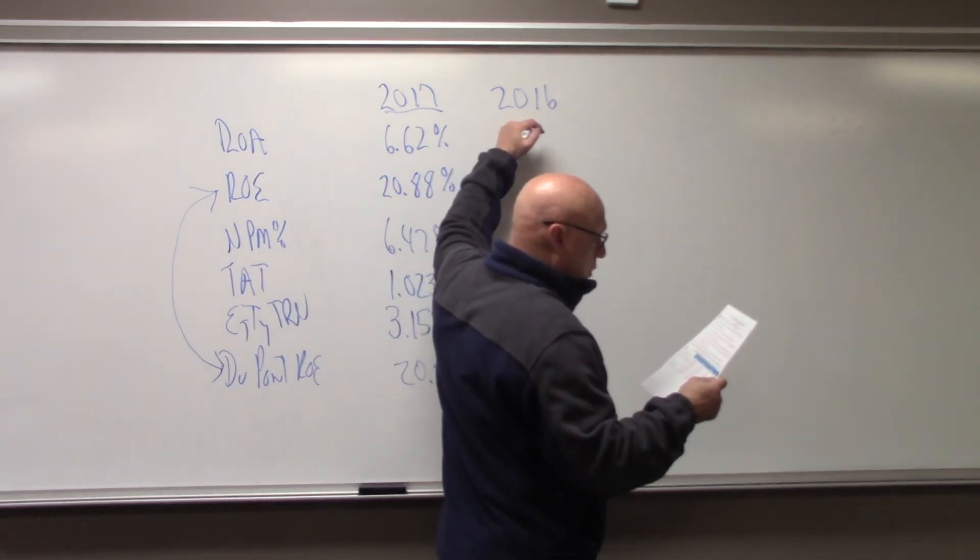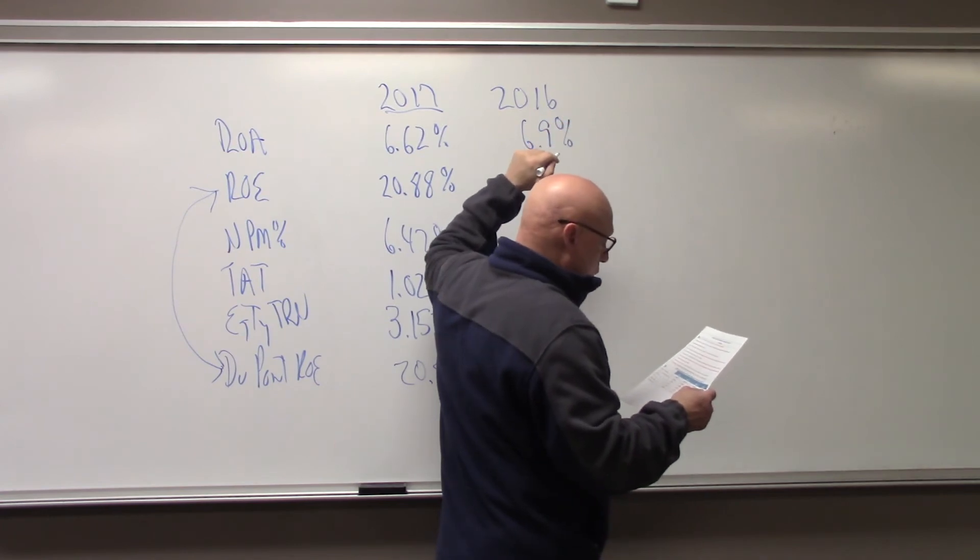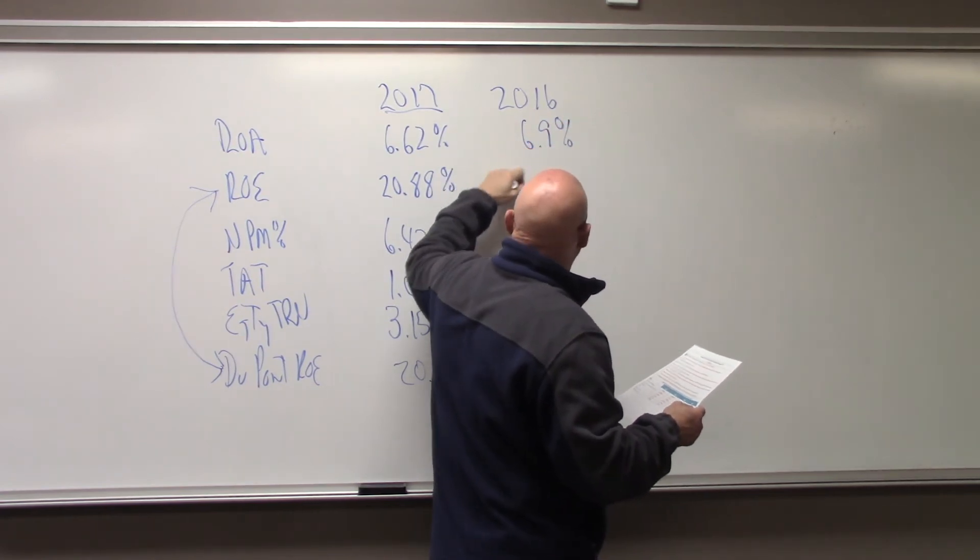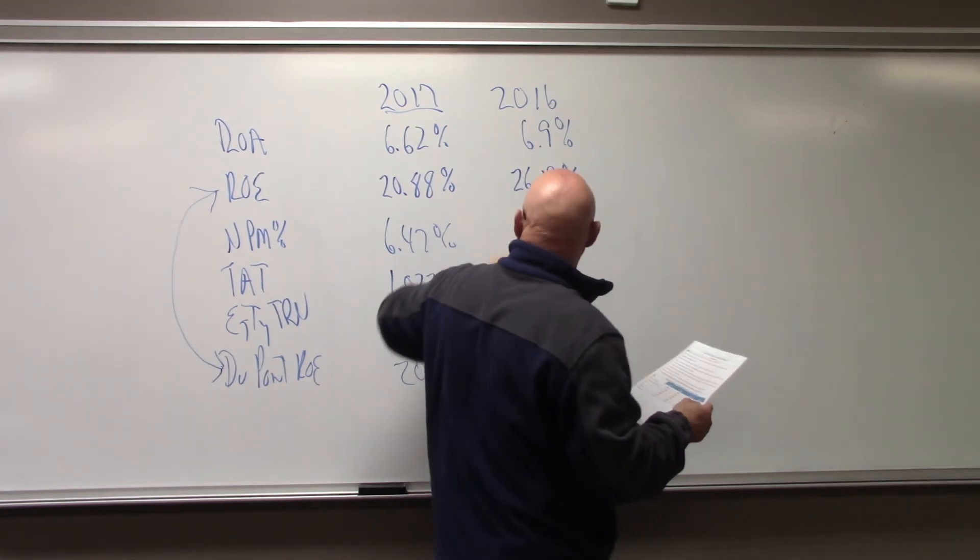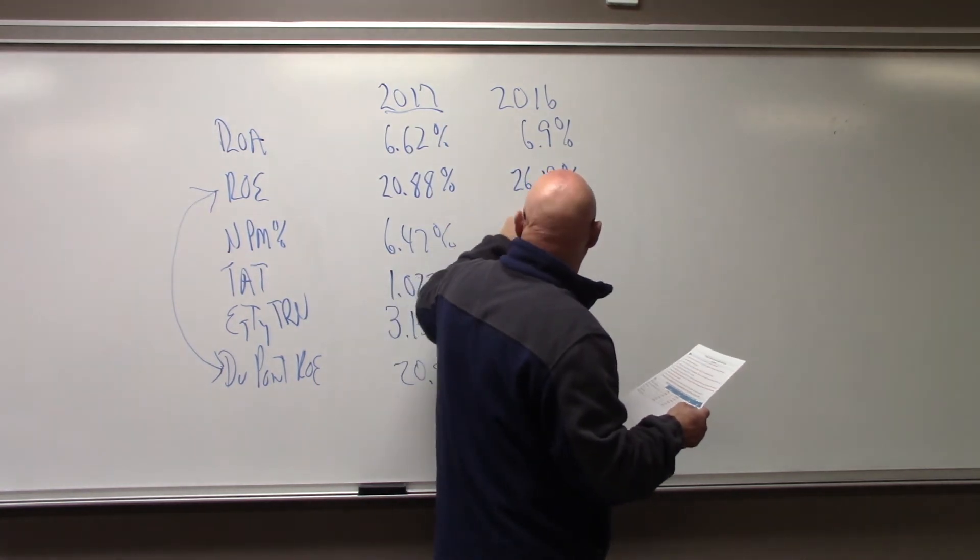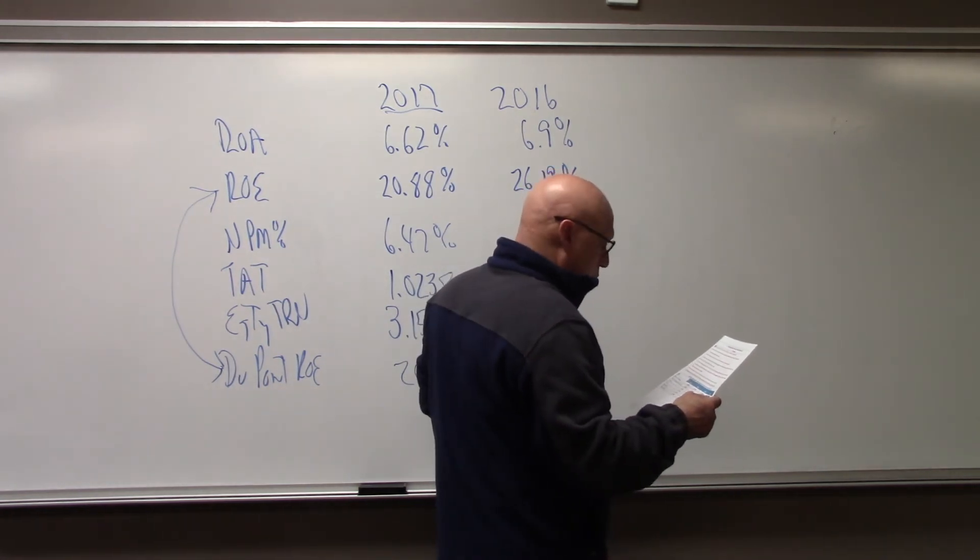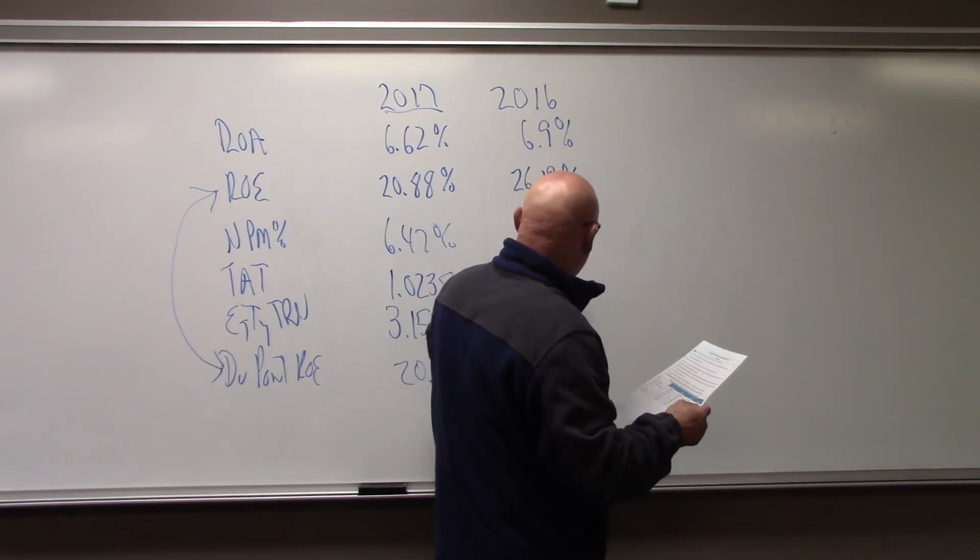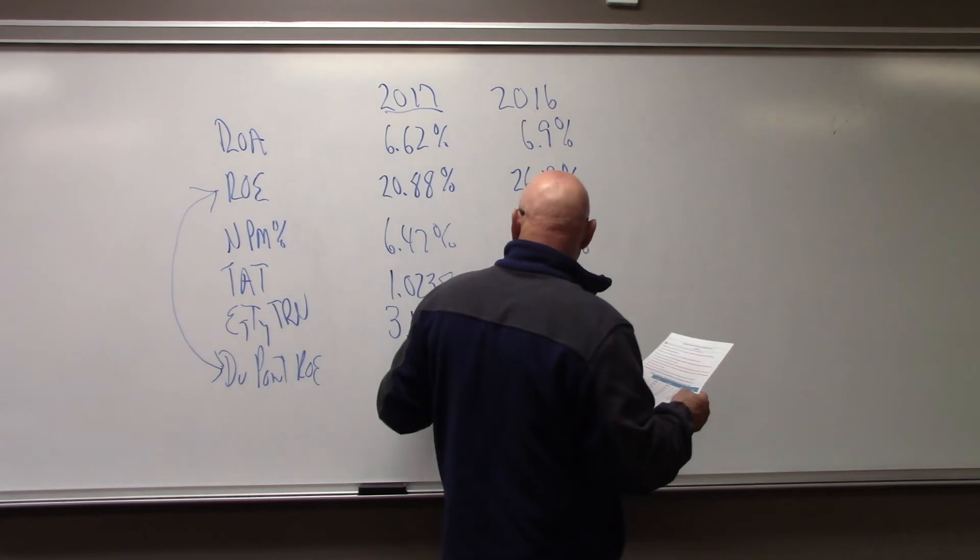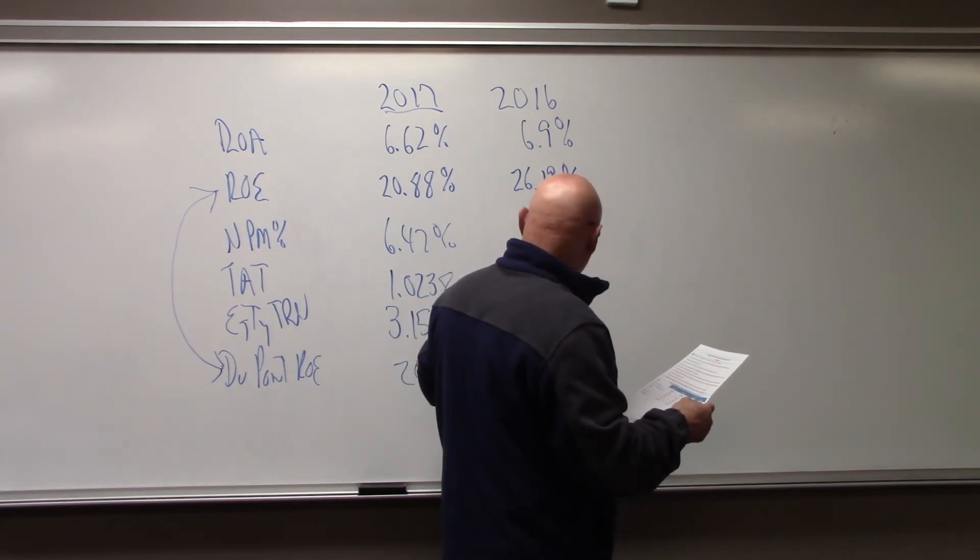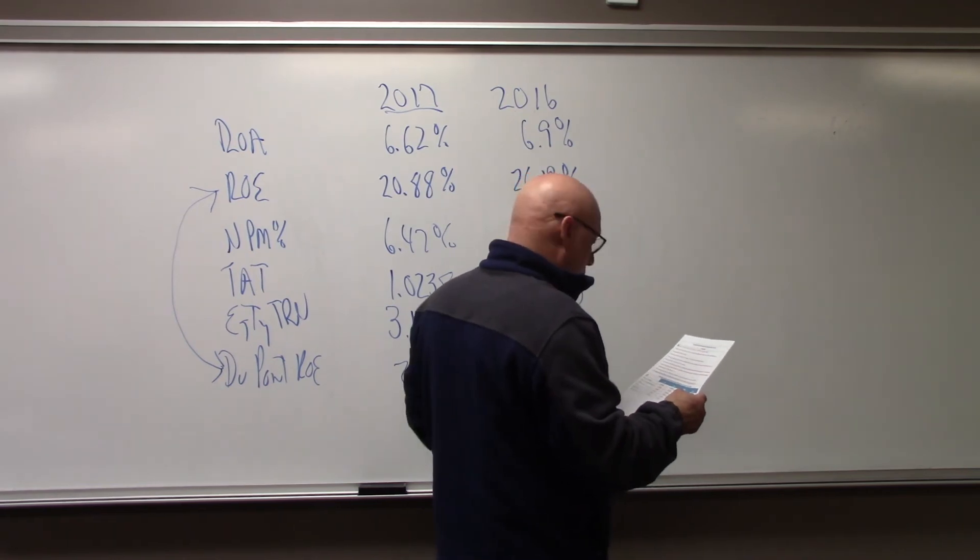2016: 6.9% return on assets. Return on equity, 26.19%. Net profit margin percentage, 6.95%. Total asset turnover, 0.9935. Equity turnover, 3.7947. And return on equity, 26.19%.